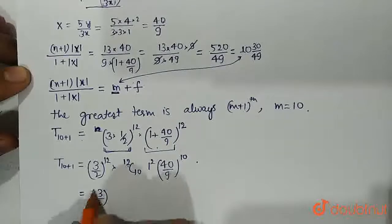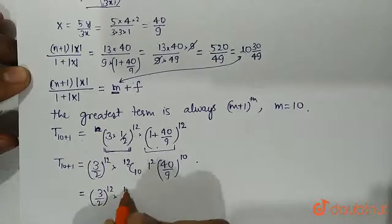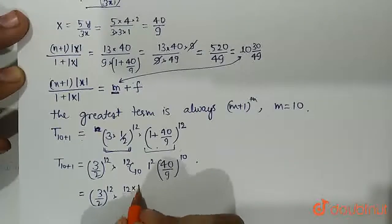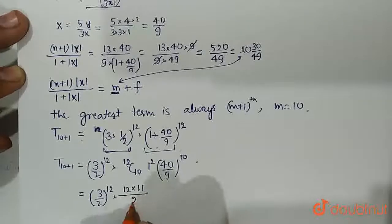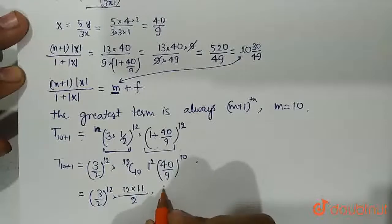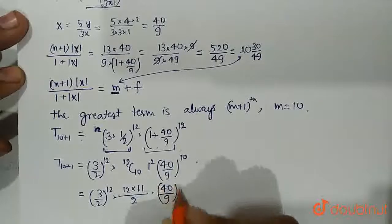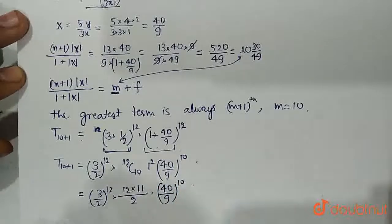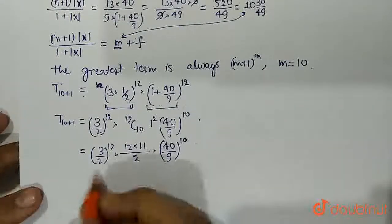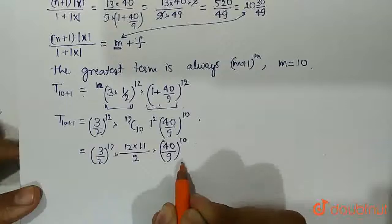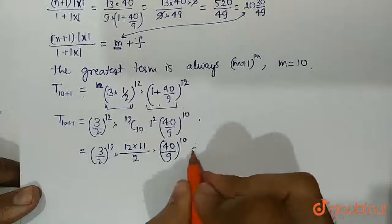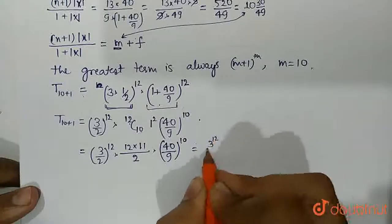3 upon 2 raised to the power 12 into 12C10 which is 12 into 11 upon 2 into 40 upon 9 raised to the power 10. This is the answer but we have to simplify this whole thing in factors of 2 and 3, preferably prime factors. So this is 3 raised to the power 12 upon 2 raised to the power 12.